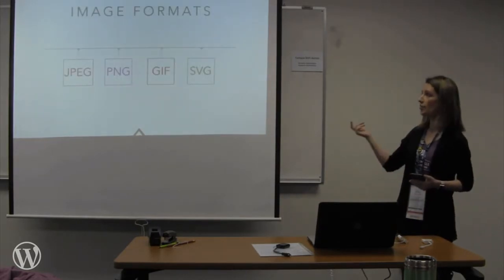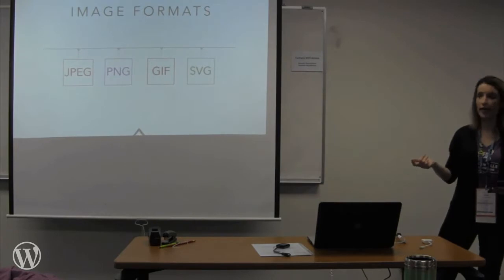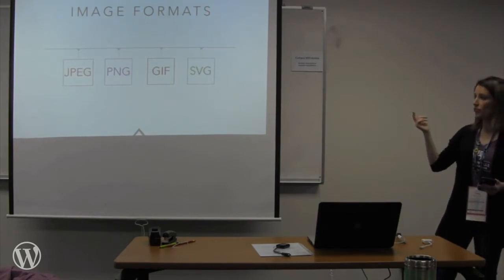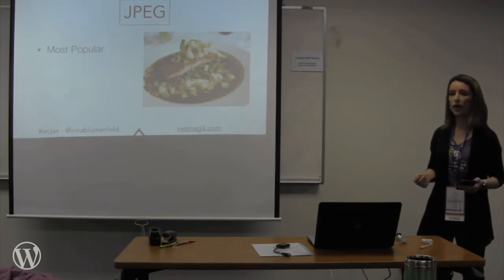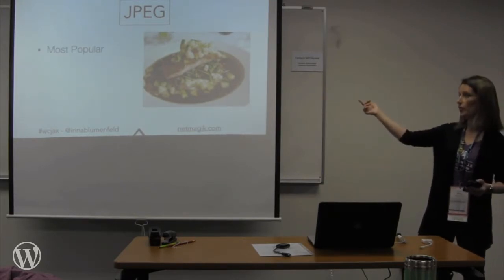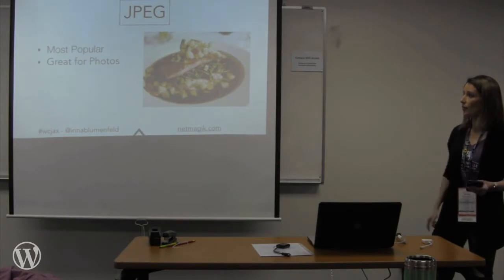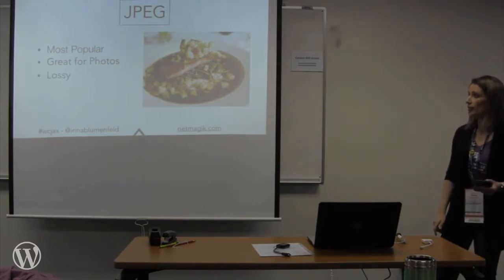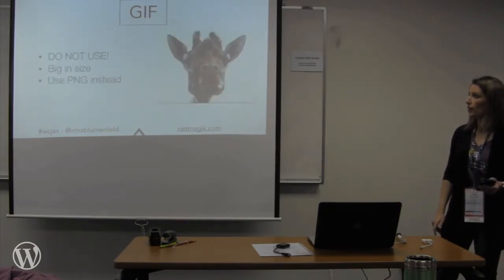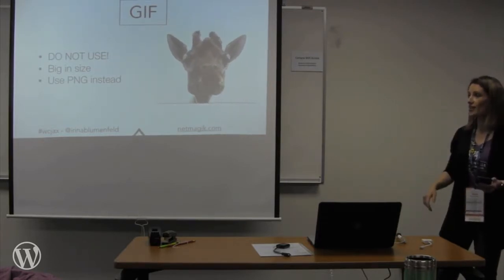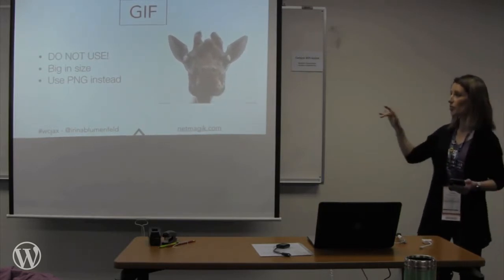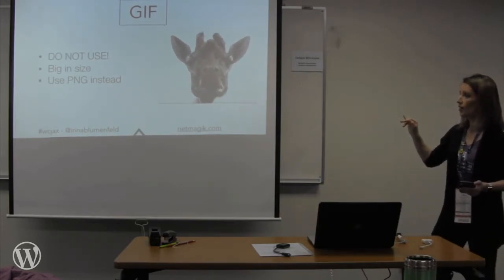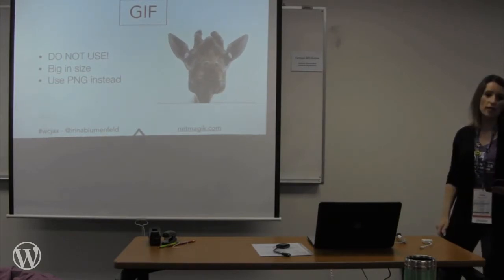I'm going to talk about popular image formats used on the web right now: JPEG, PNG, GIF, and SVG. JPEG is the most popular — it's used for photos with many colors, and it is a lossy format. GIF used to be more popular for animations but is really big in size. If you need to provide transparency for an image, use a PNG instead.